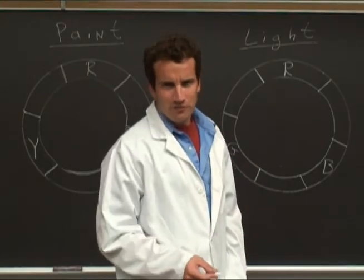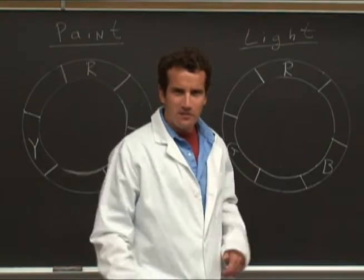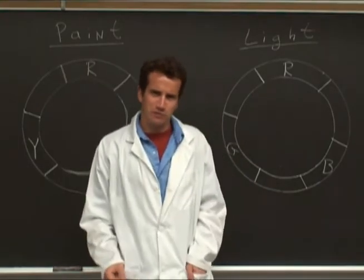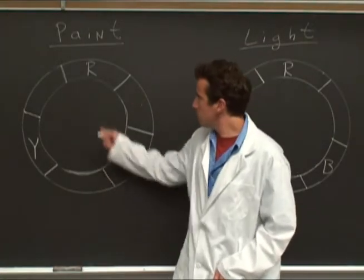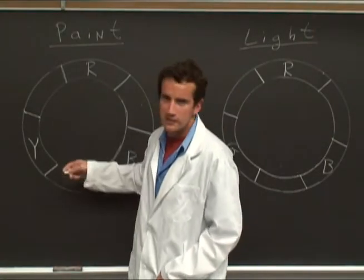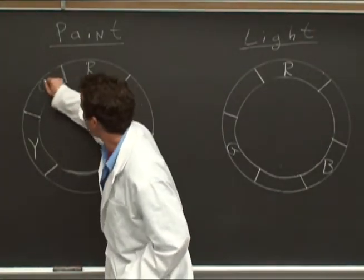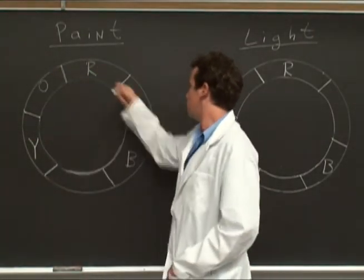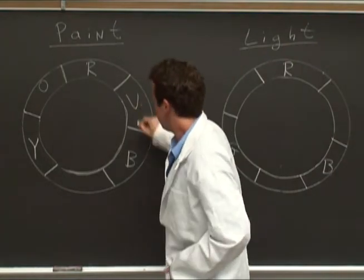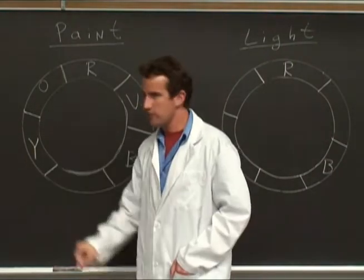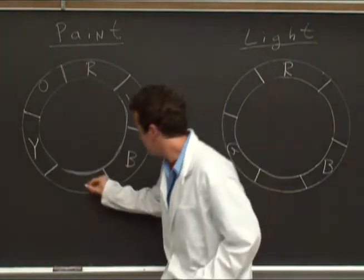The color wheel for light is not at all the same as the color wheel for paint. When you mix paint, for example, red and yellow, you get orange. Red and blue — violet. And blue and yellow — green.